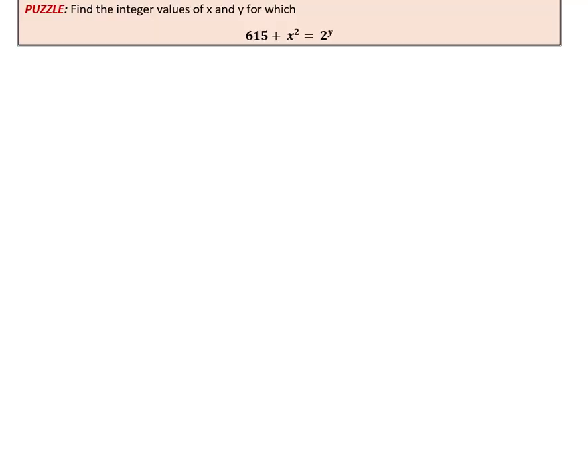This puzzle was posted to Melsa Mumbai's puzzle SIG and it goes like this: 615 plus x squared equals 2 raised to y. In this equation we have to find integer values of x and y that satisfy.